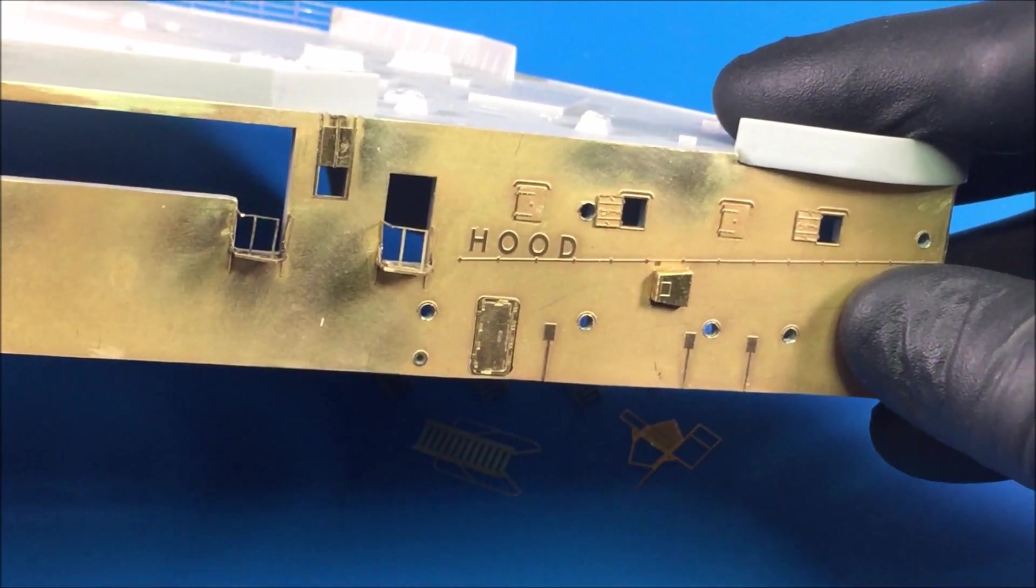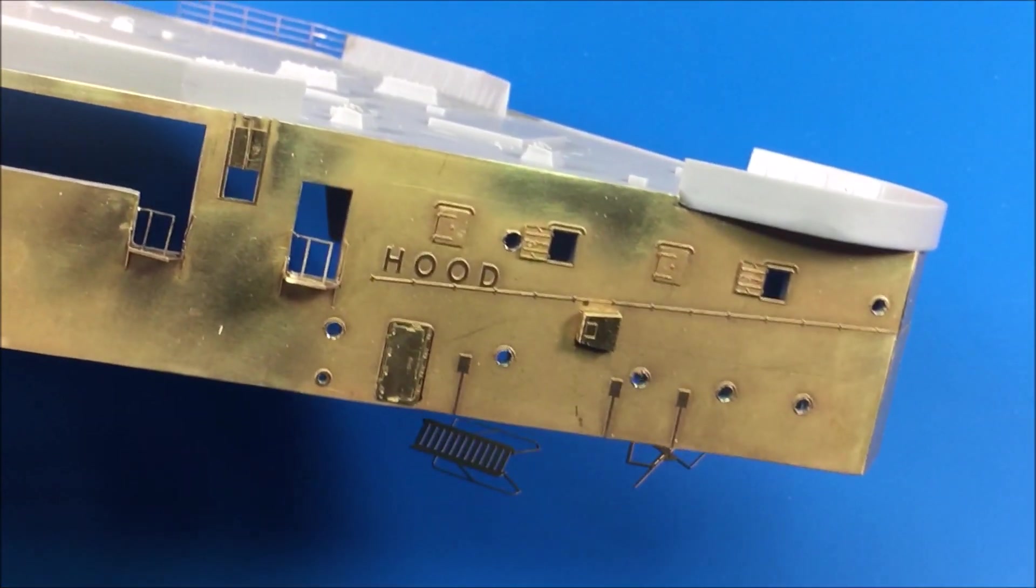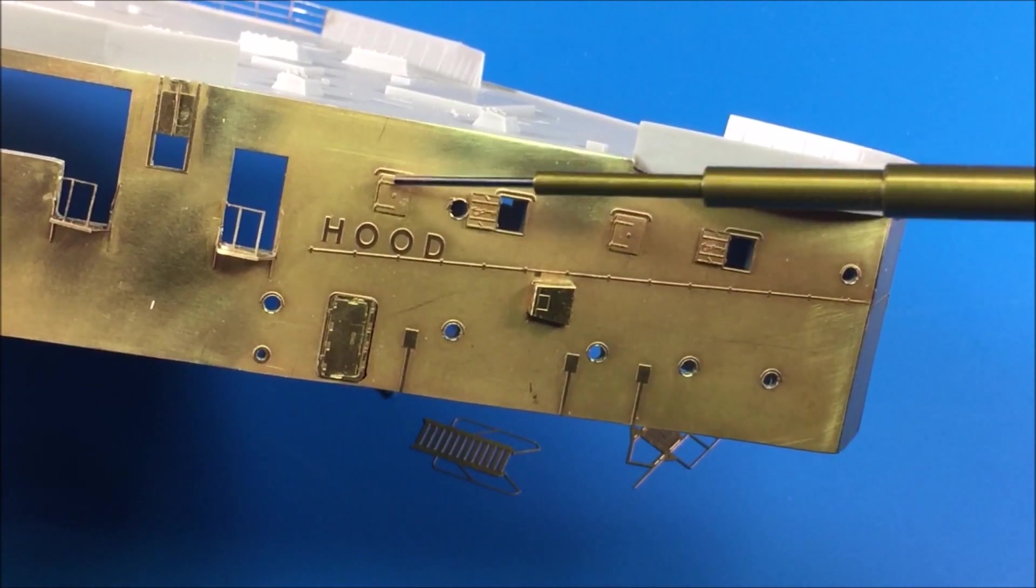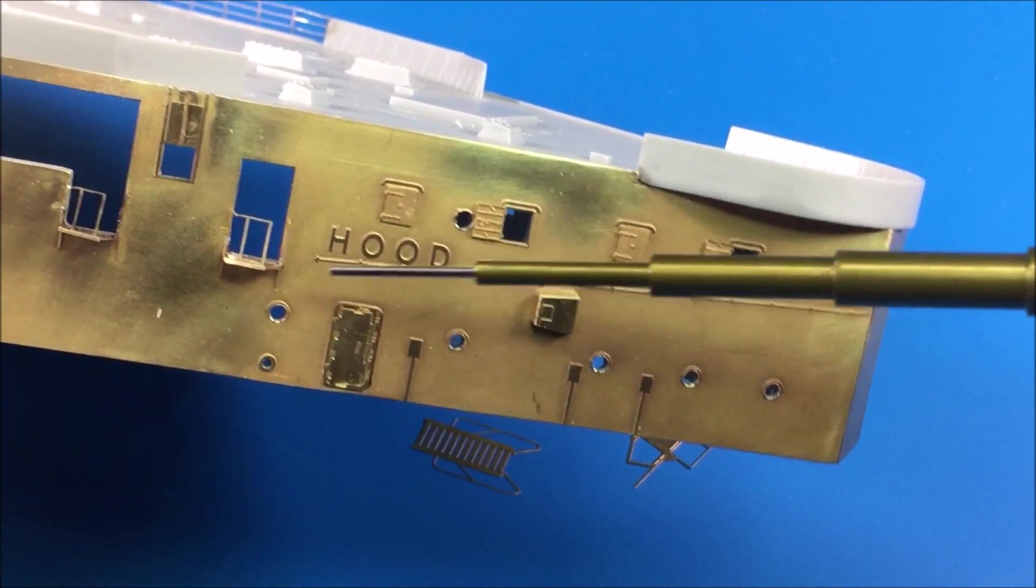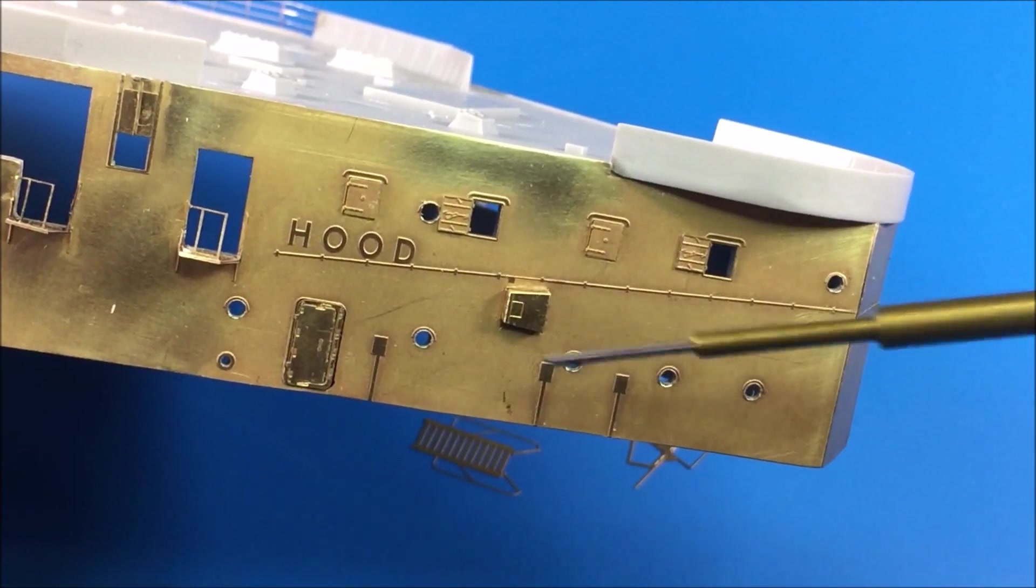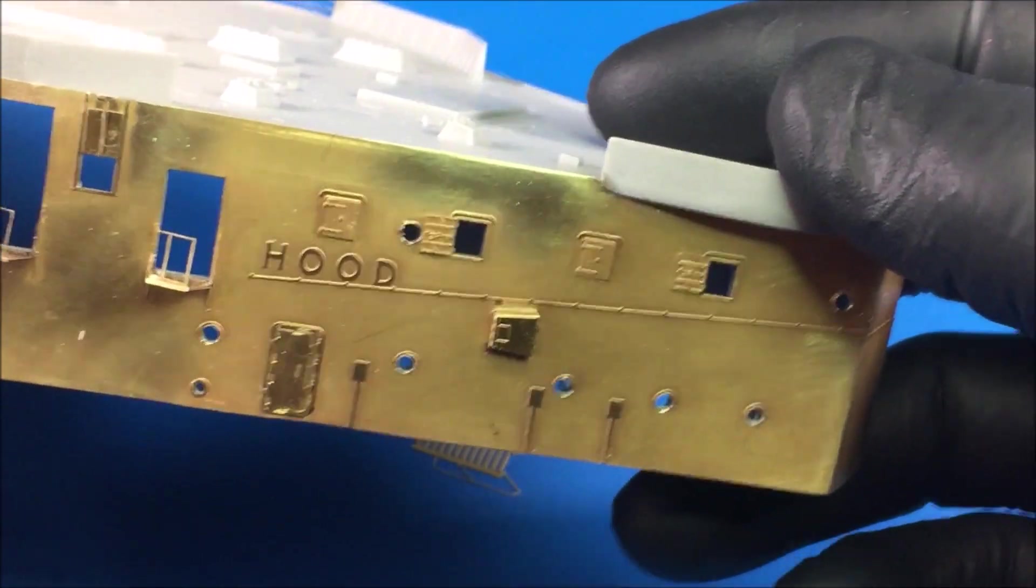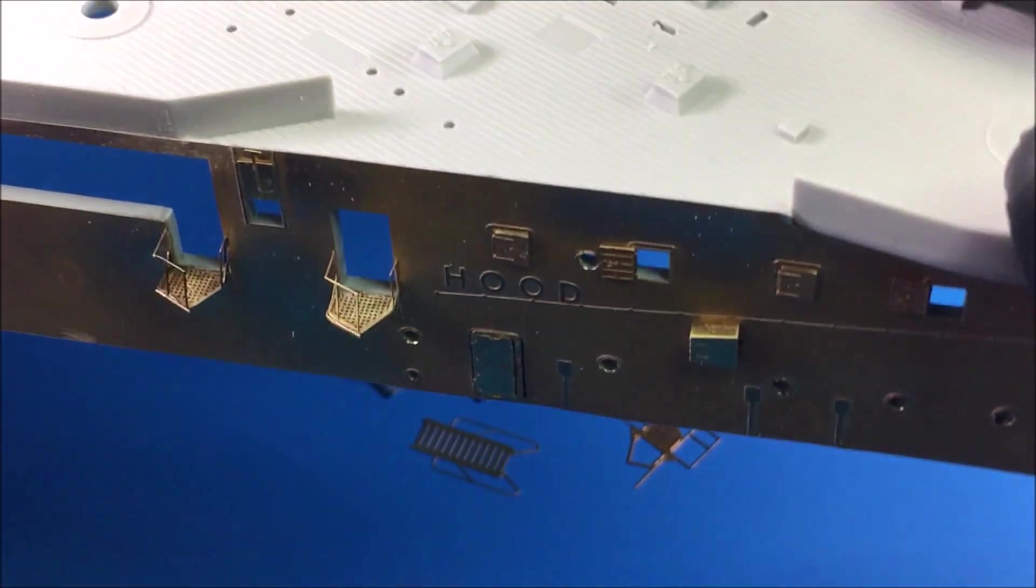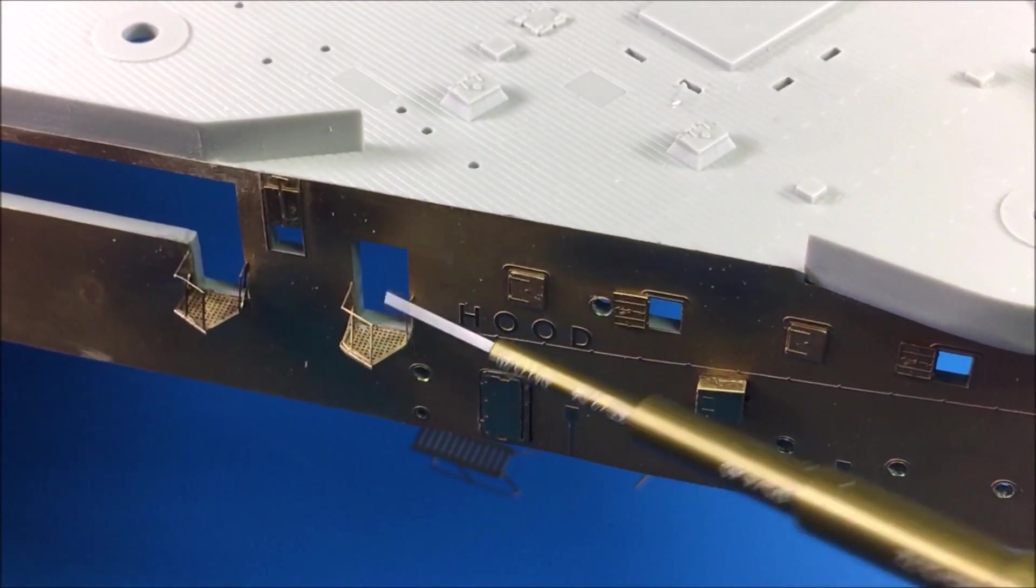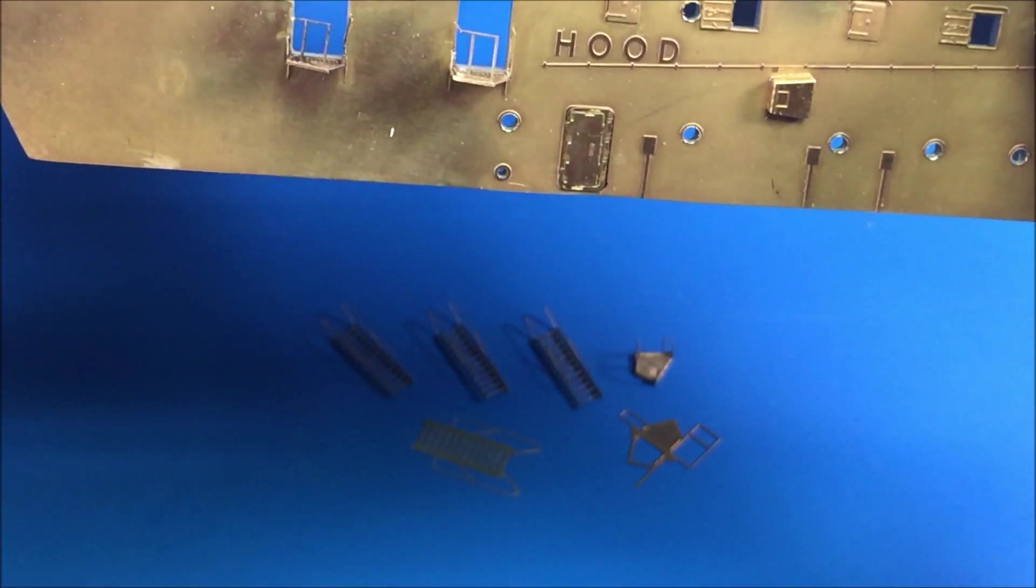I thought I'd give you a closer view here of some of the photo etch I've added to the 1/200 scale Hood that I'm working on right now. All these parts here are photo etch pieces that were glued on after the portholes had to be drilled out.